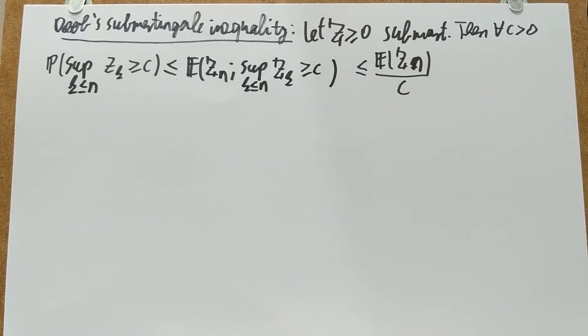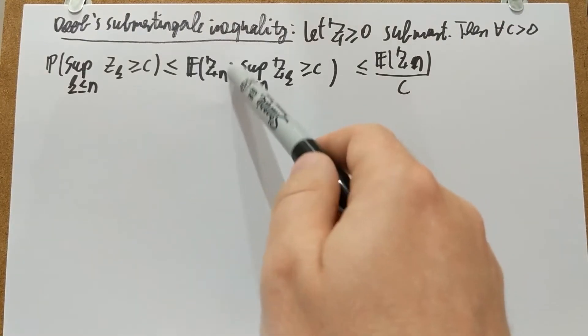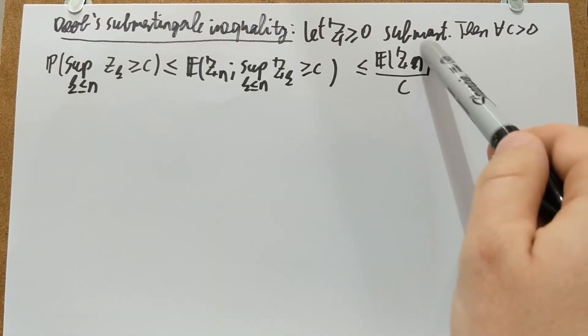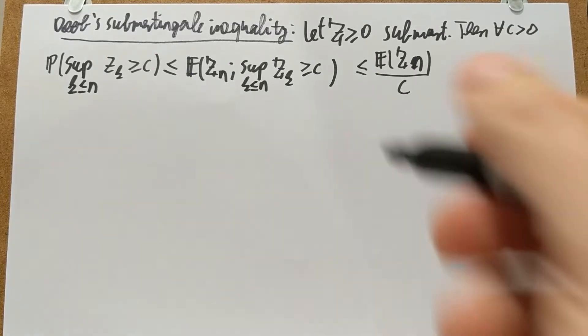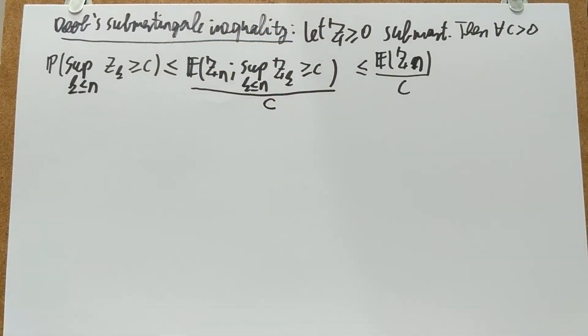So that is going to be the thing I prove. It's clear that this is an indicator and Z is non-negative, so this is clearly bounded by that. As soon as I put down the over C, which I forgot, sorry for that.